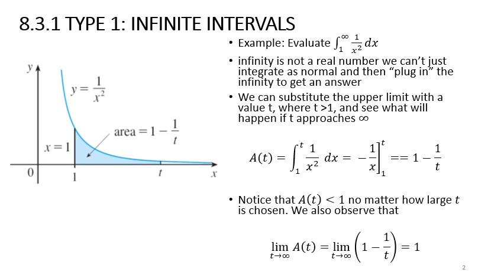You want to find the area from x equals 1 towards infinity, but you cannot simply plug in infinity. When you integrate 1 over x squared, you get negative 1 over x. Your lower limit is 1 and your upper limit is t. Substituting, you get negative 1 over t minus negative 1 over 1, which gives you 1 minus 1 over t.